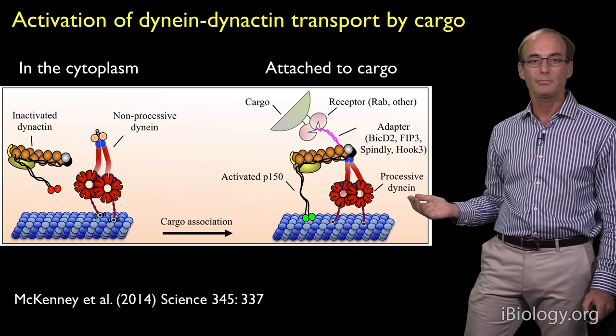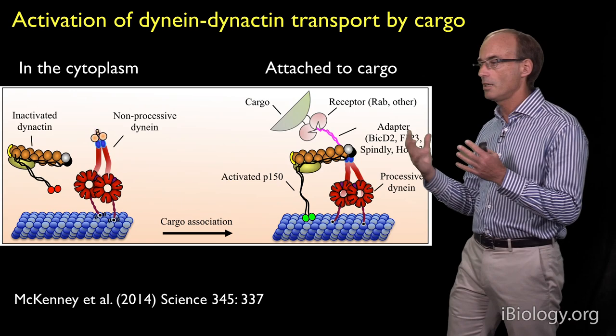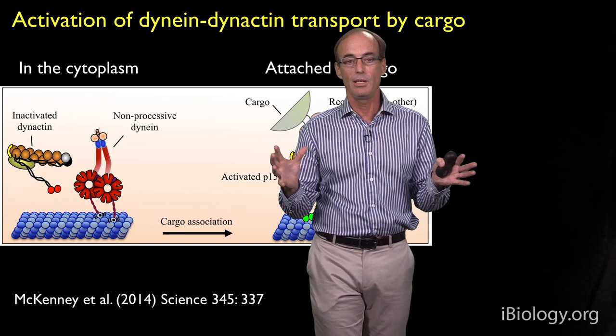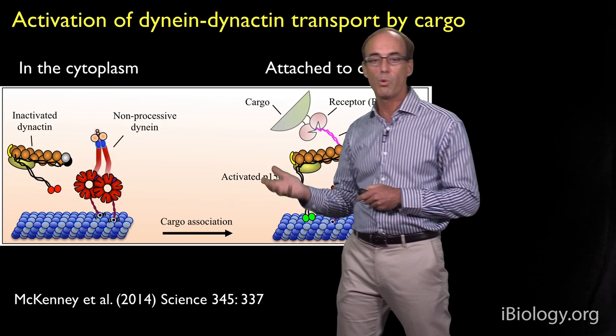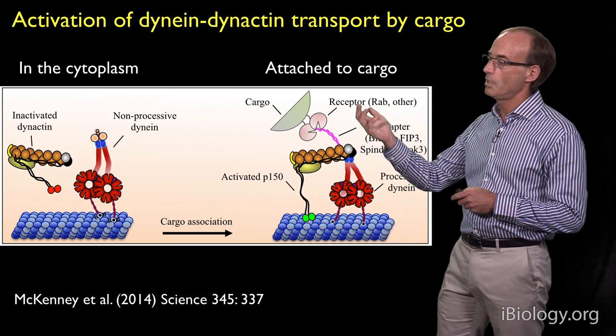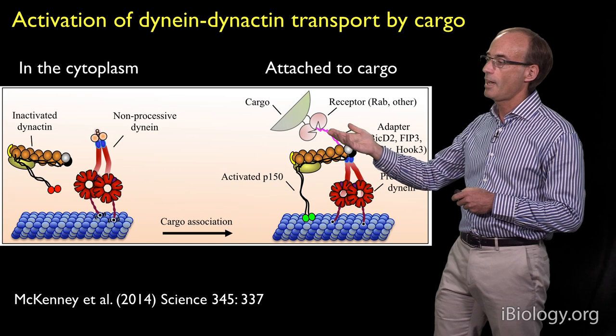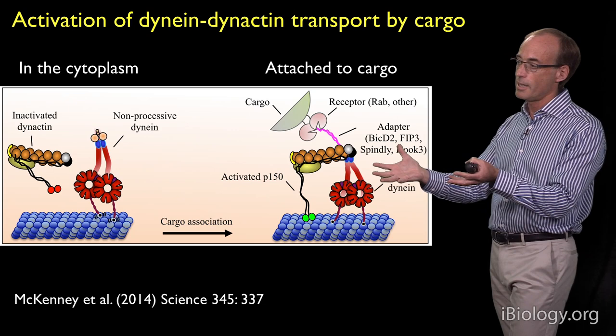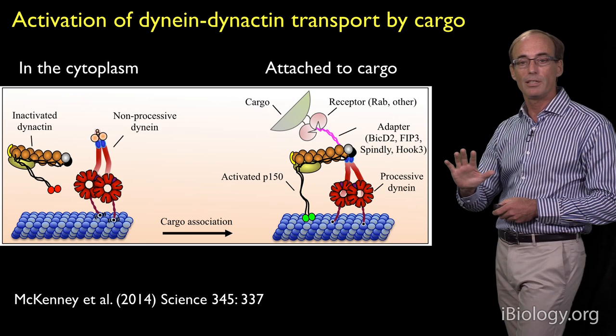The general model emerging from these in vitro studies is that perhaps in the cytoplasm, when dynein is not attached to a cargo and dynactin is not attached to a cargo, these molecules are largely inactivated. The activation of these molecules is linked to their simultaneous binding to a cargo. A cargo molecule with a receptor can bind to an adapter protein, which in some cases can activate that adapter protein. That adapter protein then brings dynein and dynactin onto the surface of the cargo and also activates it, so the motor is now active and can transport that cargo along the microtubule track.